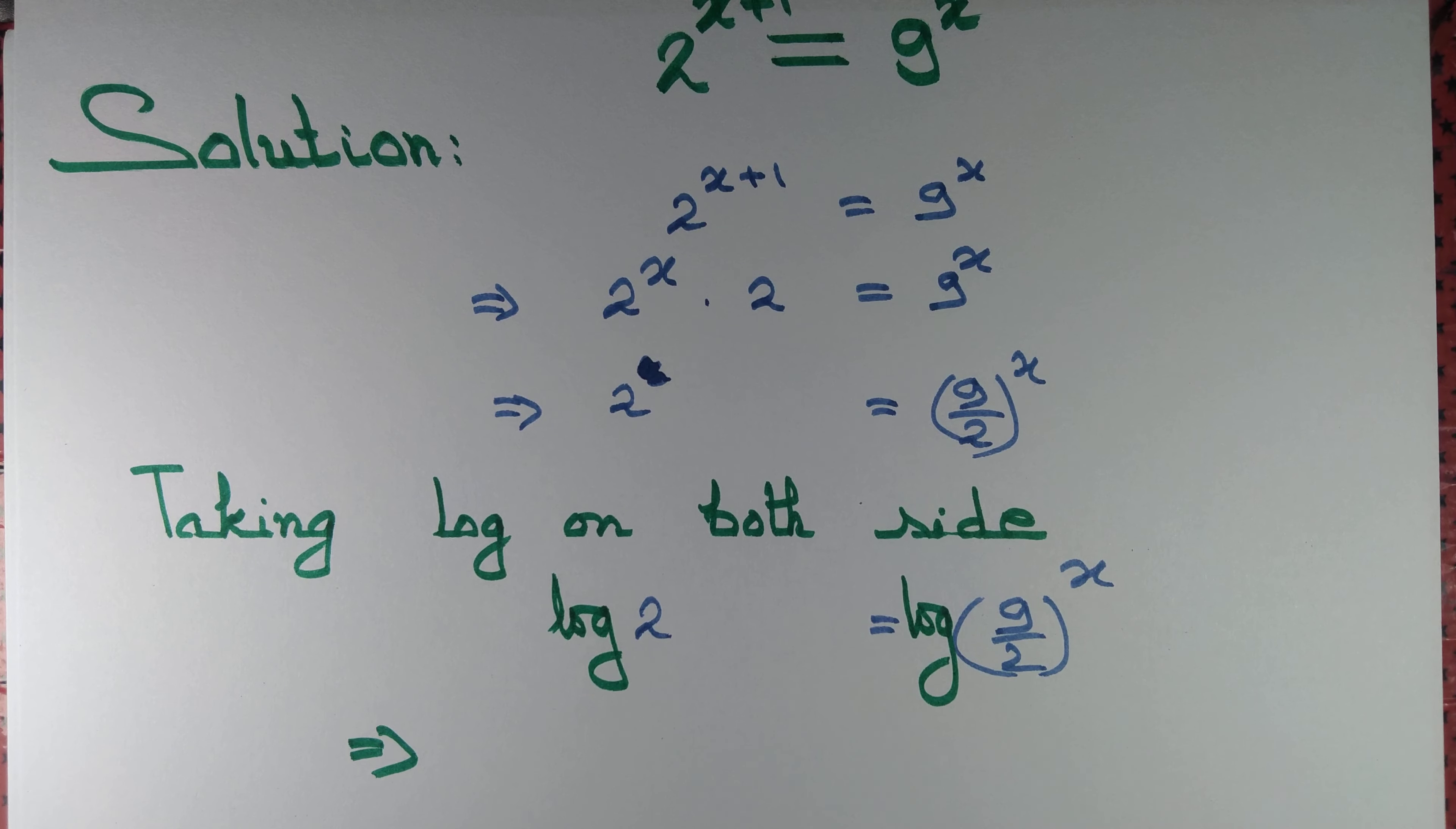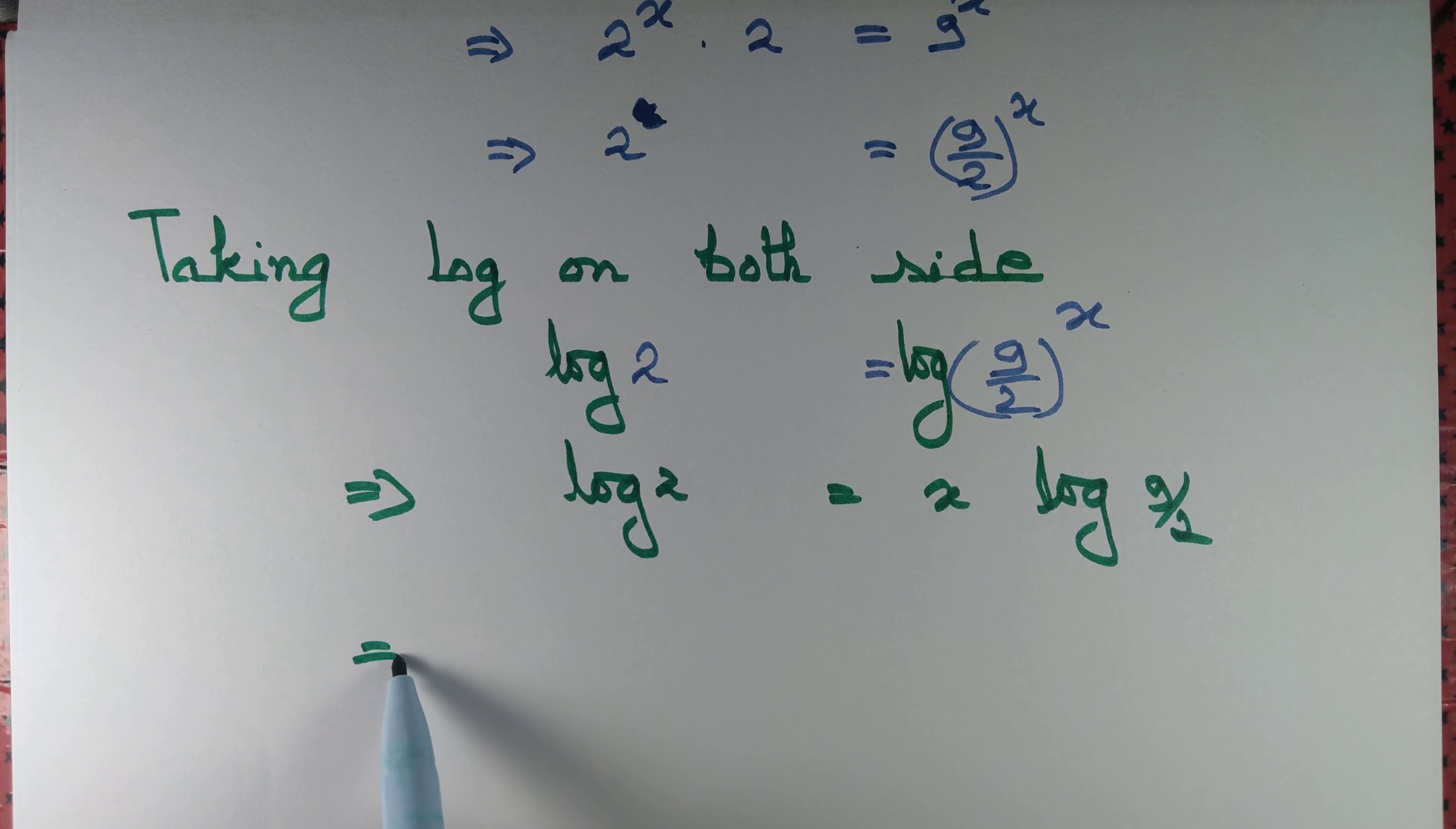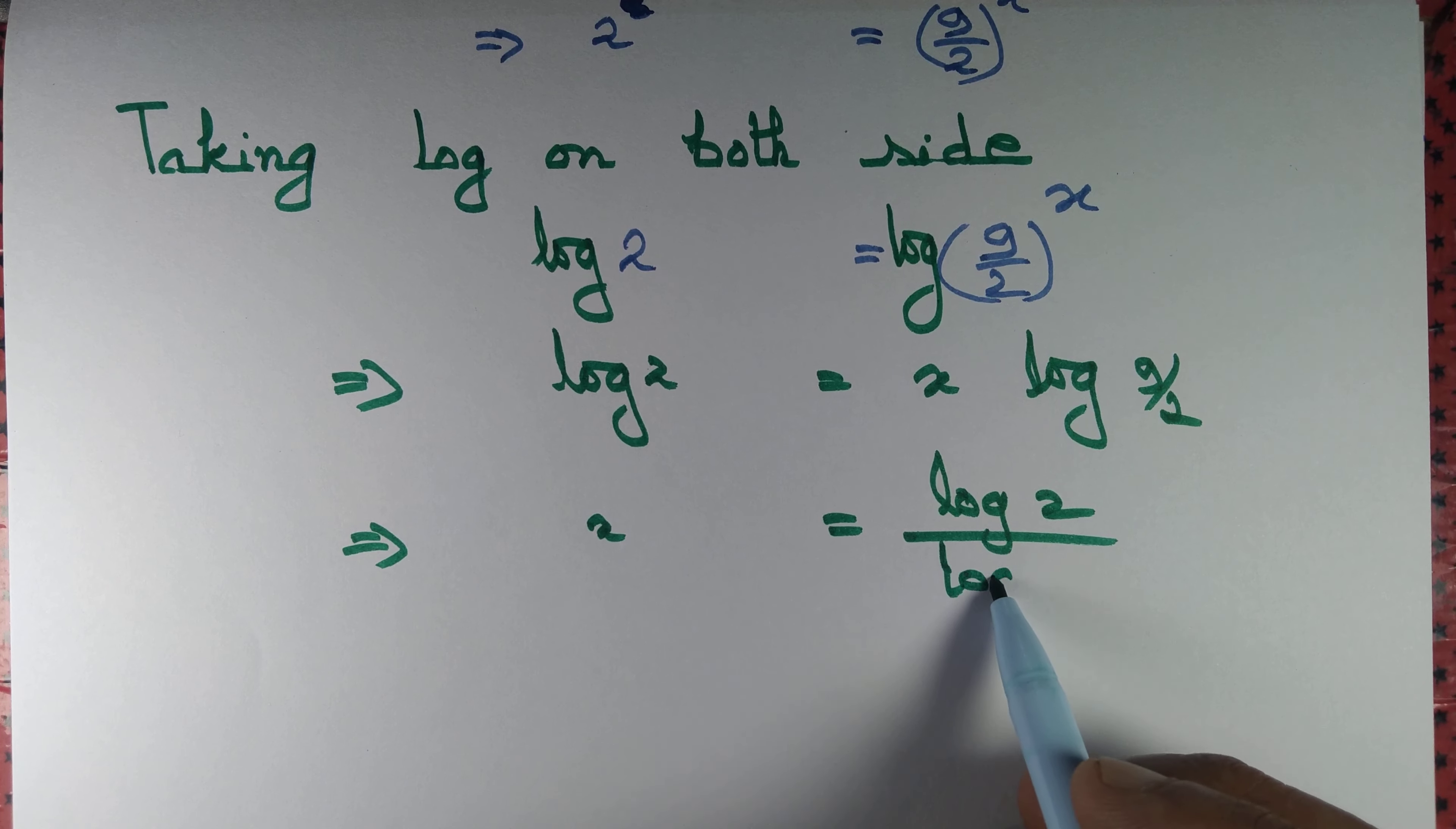From there it follows that log of 2 equal to x times log of 9 by 2. And so x equal to log of 2 divided by log of 9 by 2.